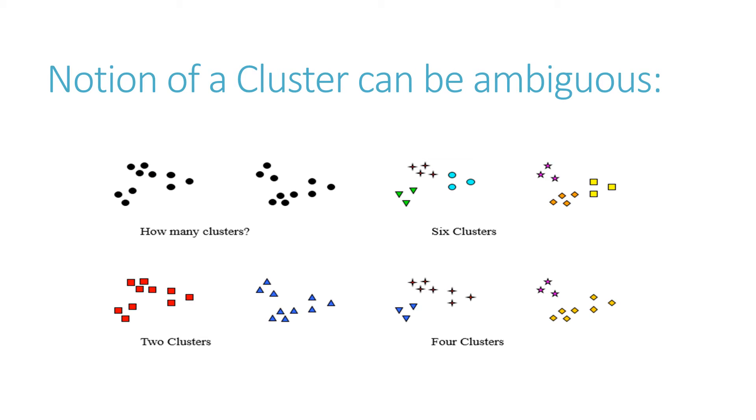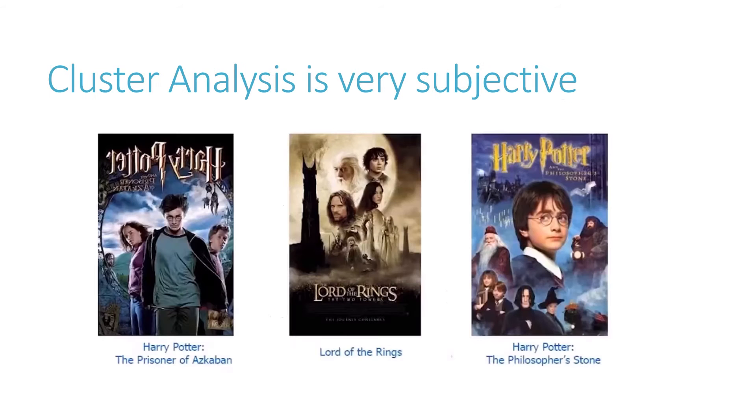The notion of cluster analysis can be very ambiguous, as the same data can be divided into different numbers of clusters depending upon the researchers. As here you can see, the first researcher divided the whole group into six clusters, the second into two clusters, and the third into four clusters. It would be very ambiguous.